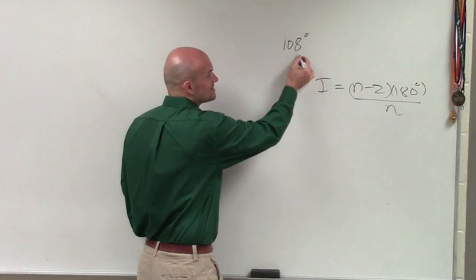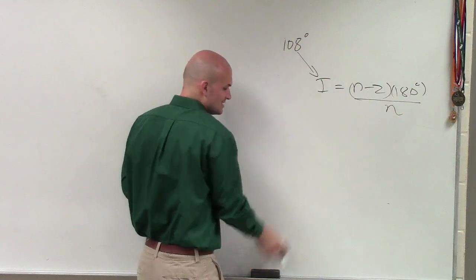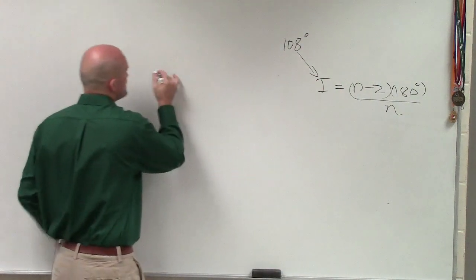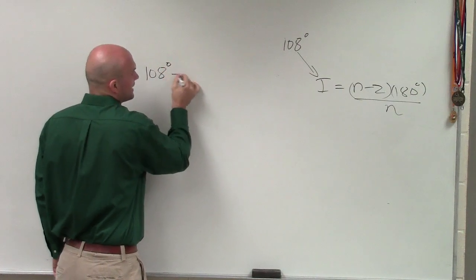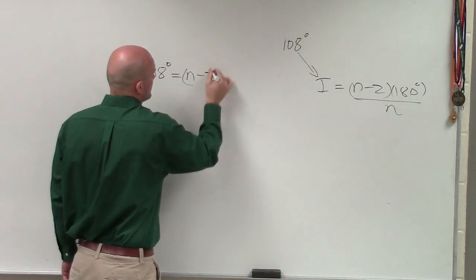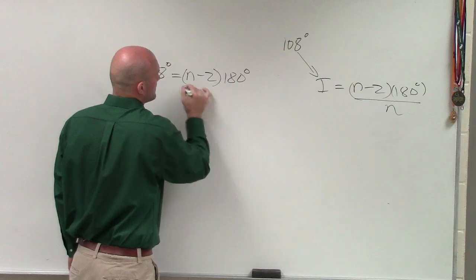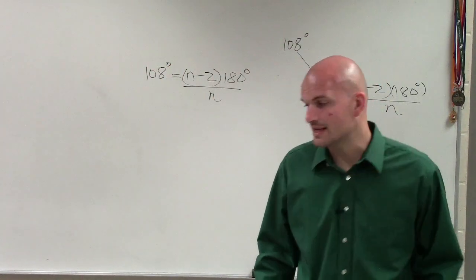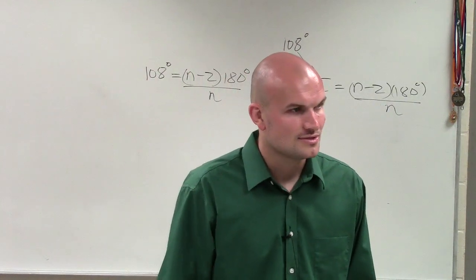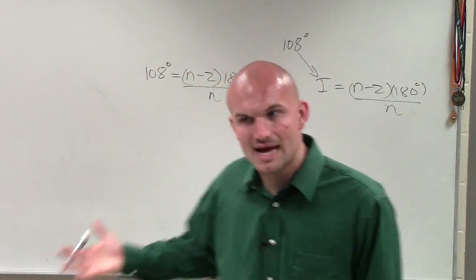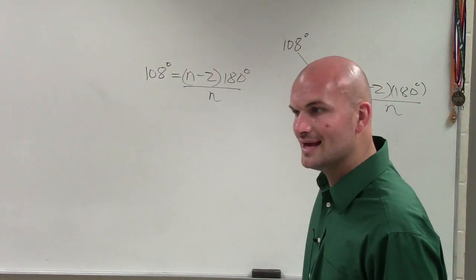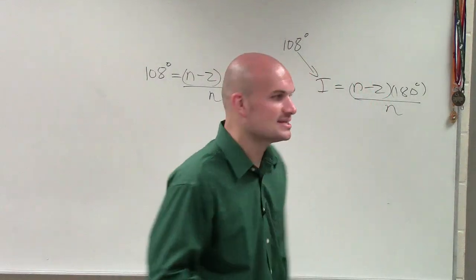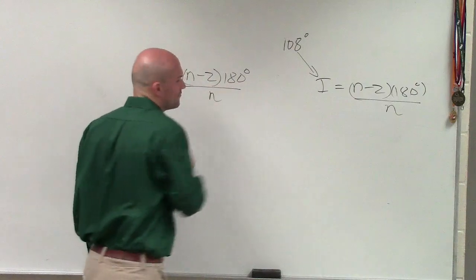So they're telling us, pretty much the same, is the measure of one angle is equal to that. So what I'm going to do is I'm going to say, alright, 108 equals n minus 2 times 180 divided by n. And then what they're asking us is, find the number of sides. So what represents the number of sides? n. n represents the number of sides, right? So I need to solve for n.